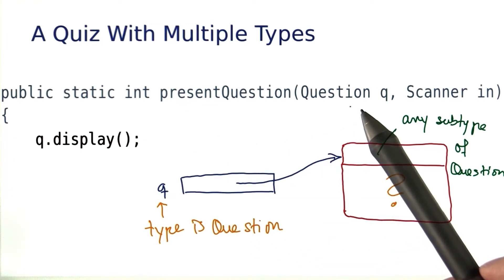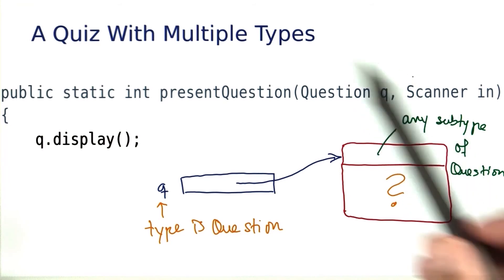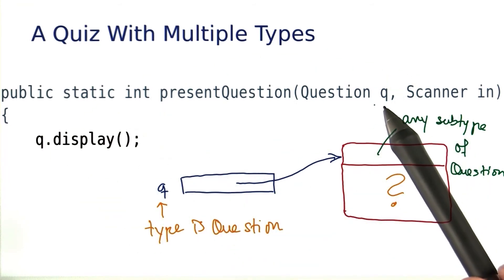This is a very useful feature because it allows us to write generic code, such as presentQuestion, that works with questions of any type.